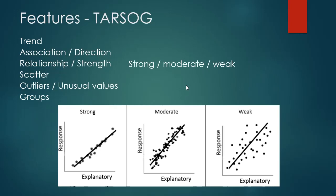The strength of the relationship can be described as strong, moderate, or weak. Strong means the data points are close to the line of best fit. Moderate means they're a little bit further away. Weak means the data points still follow a line of best fit but they're quite a lot further away. Note that strength doesn't relate to the steepness of the line — it can still be strong but not very steep.